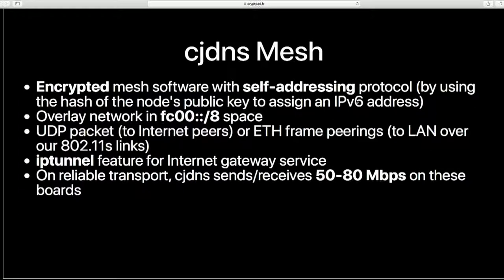In general, we're running CJDNS over an 802.11s mesh point or ad hoc link — or it can be a Ubiquiti link or Mikrotik link. It doesn't really matter what the transport is, because we're relying on CJDNS to do all the encryption. CJDNS is an encrypted mesh software that takes the encryption key and hashes it into an IPv6 address, so every node gets a unique address — it's a self-addressing protocol, and your IP address is in the FC00 IPv6 space. You can do peering over the internet with UDP peering, or peer over ethernet frames. CJDNS also supports an IP tunnel feature like a VPN, where you use the mesh as the carrier for your VPN tunnel with your own exit gateway. On a reliable transport like ethernet, we can pull 80 megabits per second on our Raspberry Pi 3 — all encrypted — but on a lossy wireless link that drops to 10 or less.